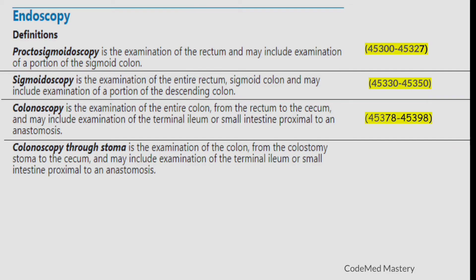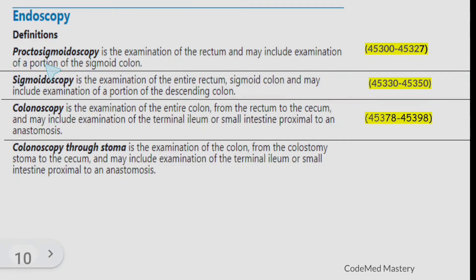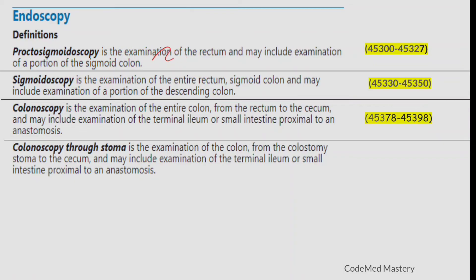For endoscopy of the large intestine, CPT manual page 374 provides definitions of key procedures. Proctosigmoidoscopy is the examination of the rectum and may include examination of a portion of the sigmoid colon. This is important to know while coding — proctosigmoidoscopy covers the rectum and possibly a portion of the sigmoid colon. The code range for proctosigmoidoscopy is 45300 to 45327.